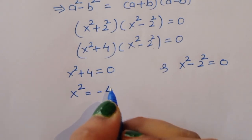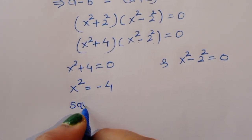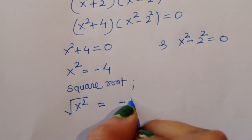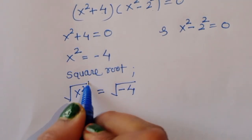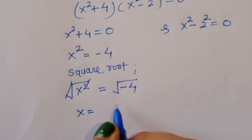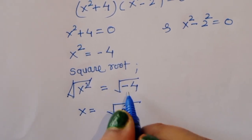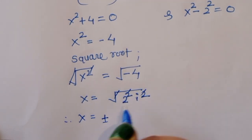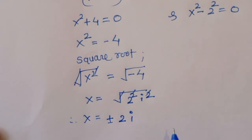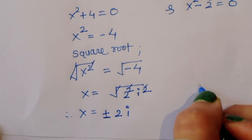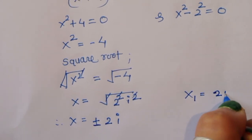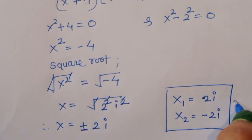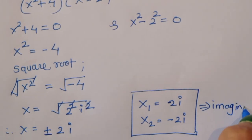From x² + 4 = 0, we get x² = -4. Taking the square root of both sides: x = ±√(-4). We can write -4 as 2² × (-1), and since -1 = i², we get x = ±2i. So x₁ = 2i and x₂ = -2i. These are imaginary solutions, not real solutions.